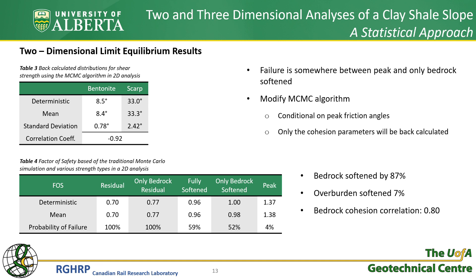To answer this, we can modify the Markov Chain Monte Carlo simulation. This time, the back calculated distribution does not only depend on the factor of safety of unity, but it also depends on the friction angles being at their peak values. The results show that on average the bedrock was softened by 87%, but the overburden softened by only 7%. There is also an average correlation of 0.8 between various bedrock materials. This demonstrates that most of the failure mechanism can be attributed to the bedrock, and that the differential softening between units is limited, suggesting the rate of softening was constant and access to water was ubiquitous.